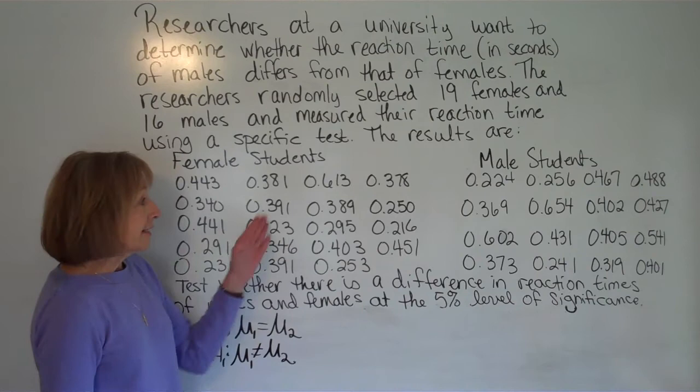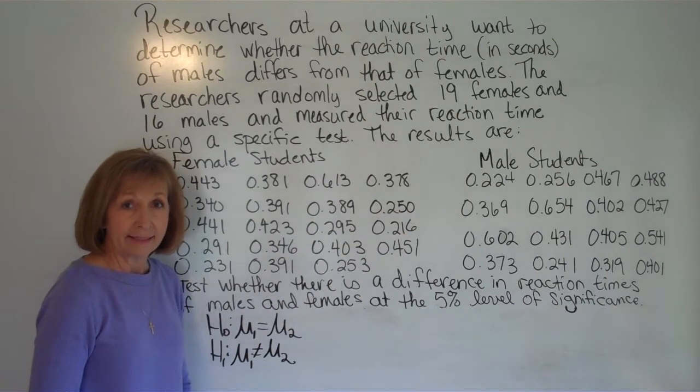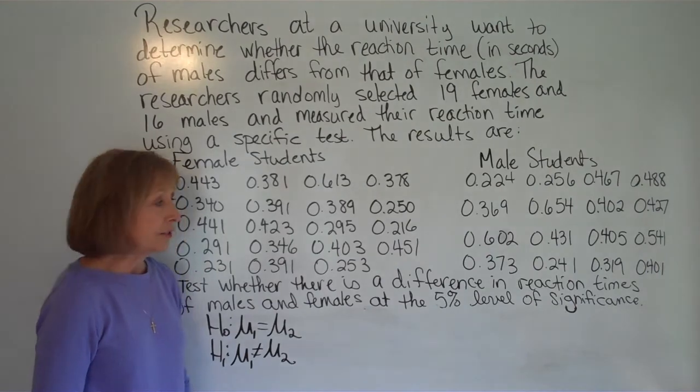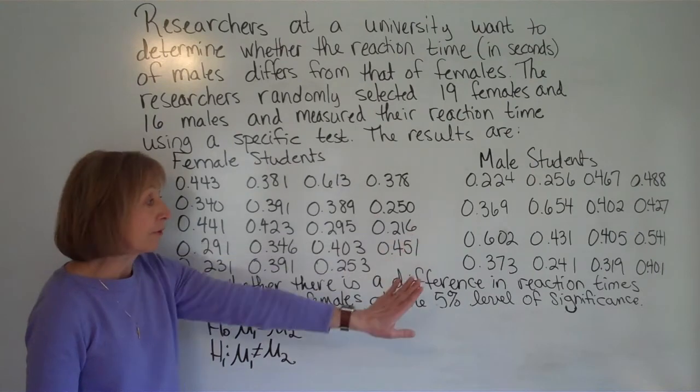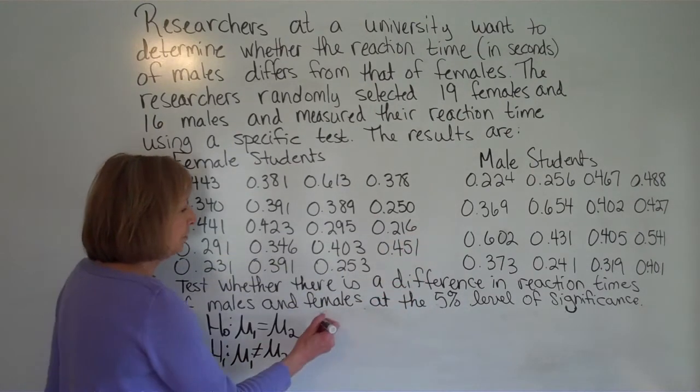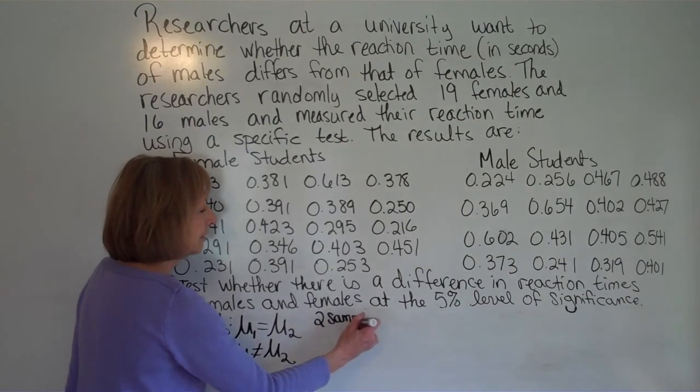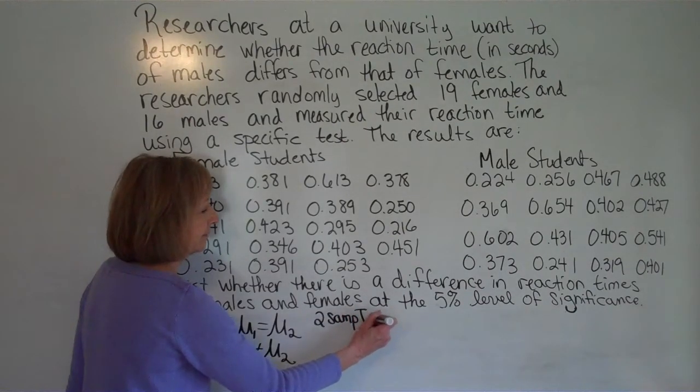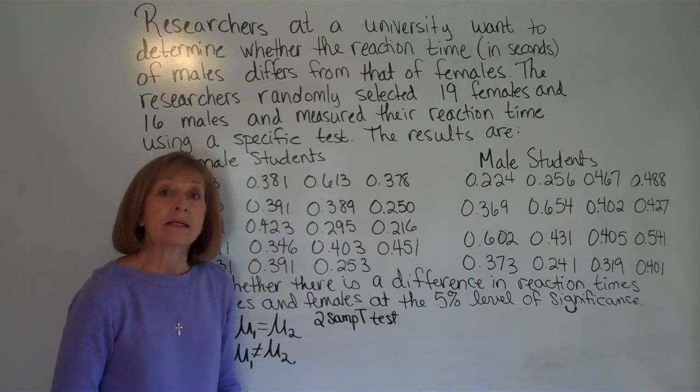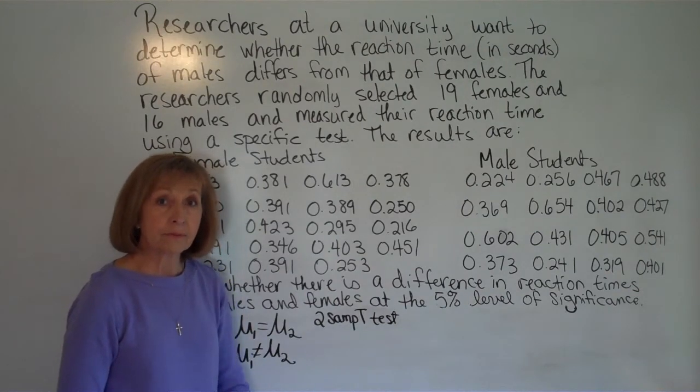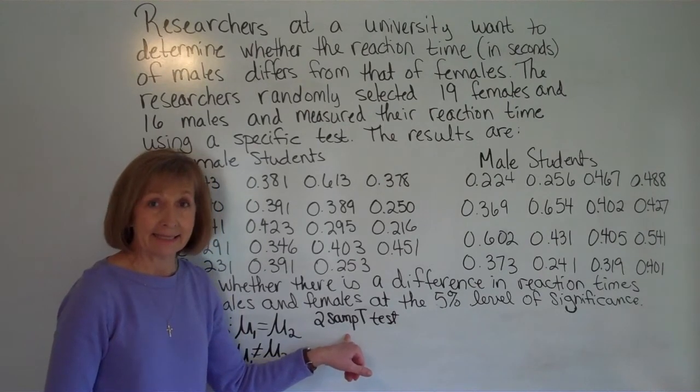Okay now you've got this data in your lists. This is your null and alternate hypothesis. So the next thing you want to do is for doing the hypothesis test with sampling from two groups for the mean you're going to do the 2-SAMP-T test. So to get to there you go STAT cursor right to TESTS and you'll see two SAMP-T tests there.